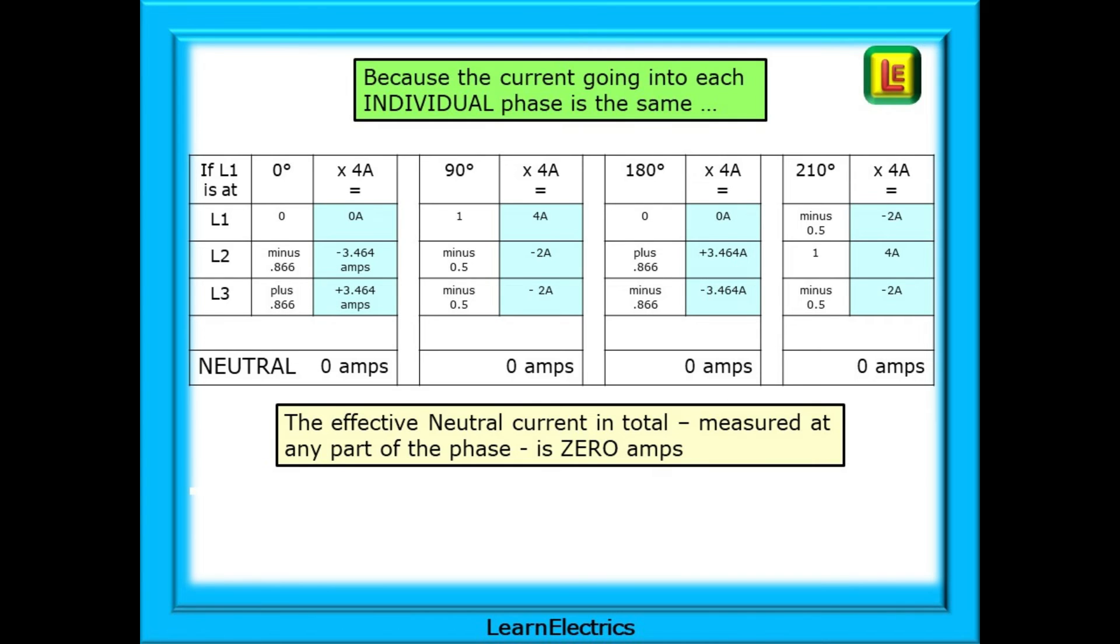Different numbers at 180 degrees, but still 0 amps. And then, at 210 degrees, different values again, but mathematically, all at 0. Because we are using the same size heater, 4 amps, on every phase, the circuit is balanced. The effective neutral current, in total, measured at any part of the phase, is 0 amps.